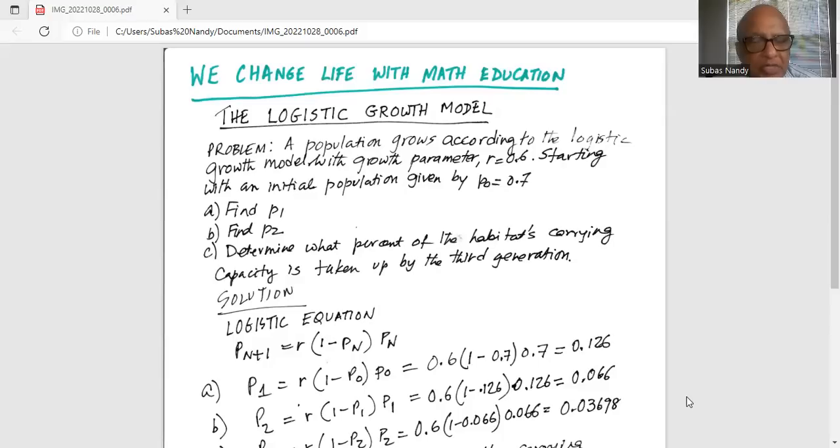So the growth parameter is 0.6 times in parenthesis 1 minus 0.7 close the parenthesis multiplied by 0.7, that thing works out to 0.126. Hence if we start with the population of p0 as 0.7, the first generation population will be 0.126 with a growth parameter of 0.6.